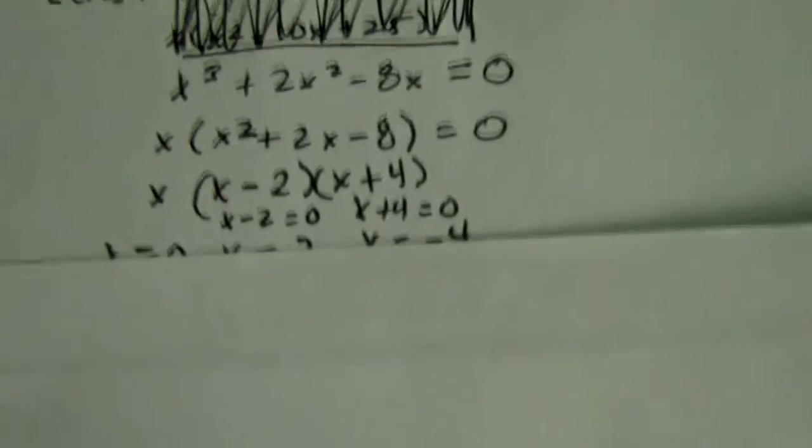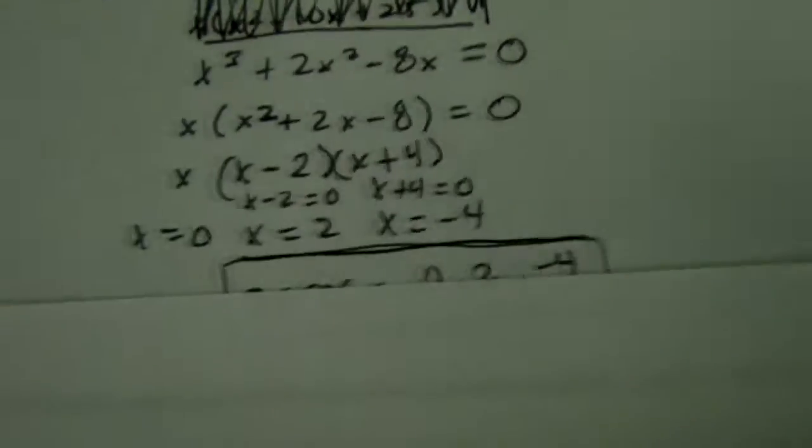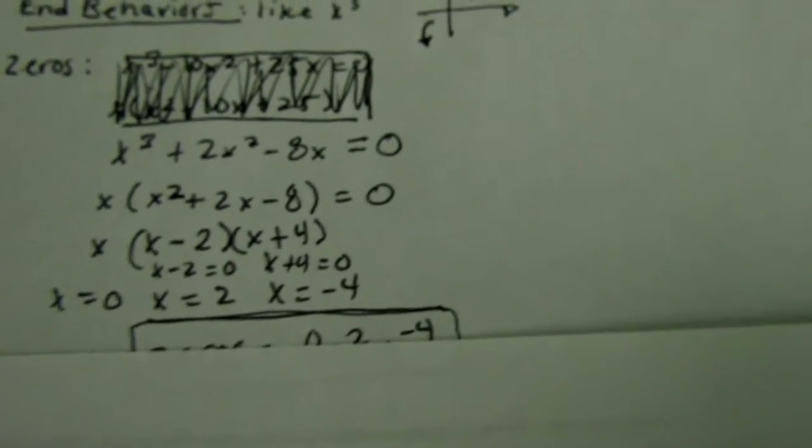Now, I'll factor that even more and we get x times (x - 2) times (x + 4) and that should equal zero.